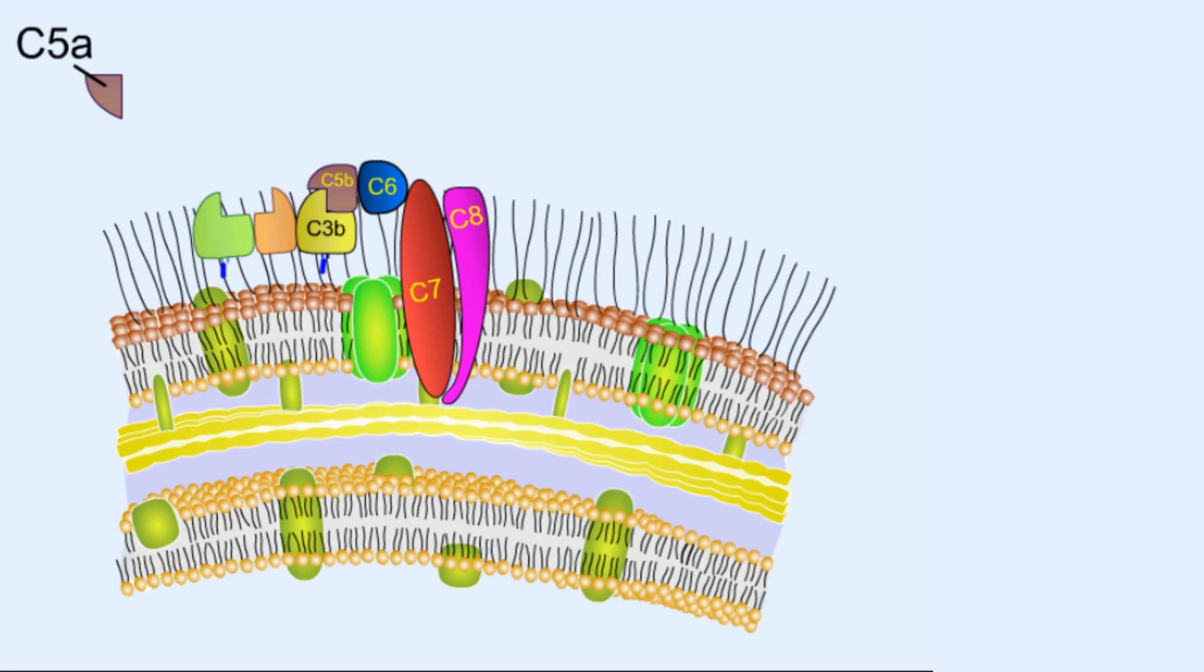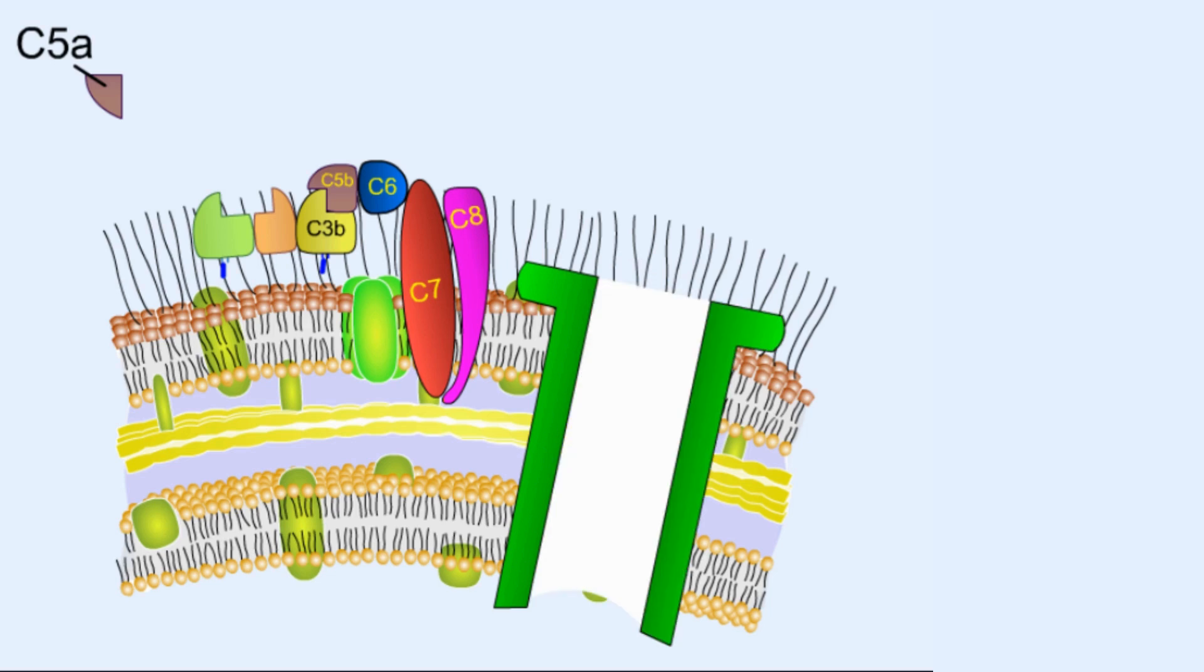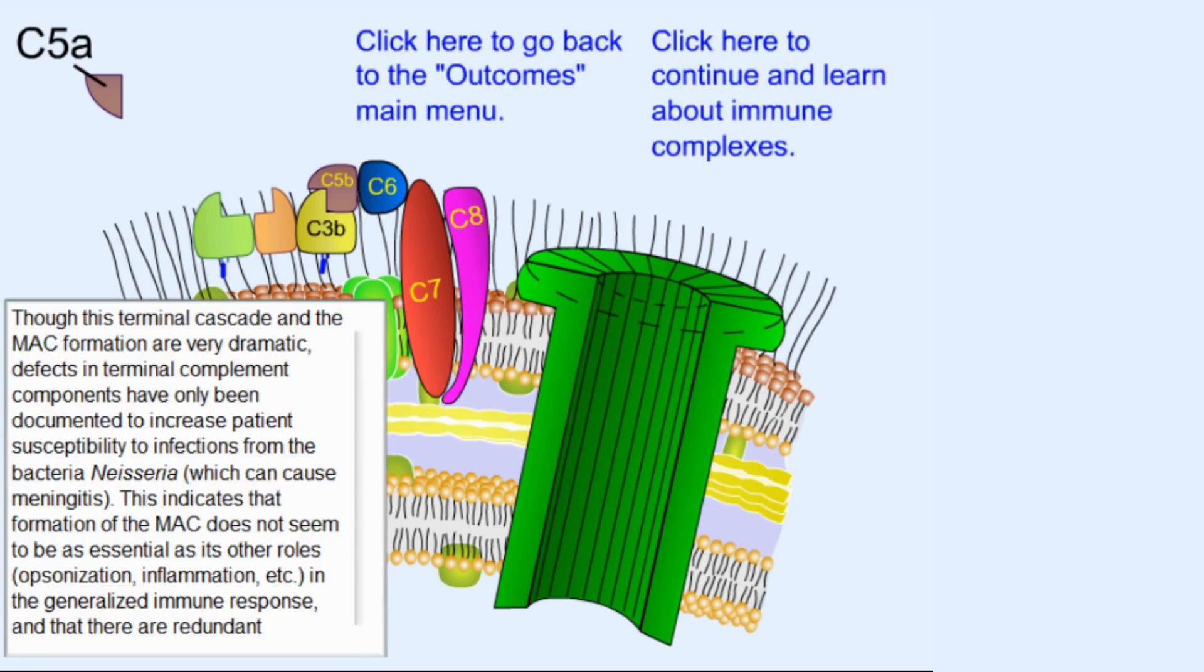Then it will recruit another set of proteins known as C9. A lot of C9 proteins will be embedded throughout the cell membrane to form a channel or a pore known as membrane attack complex. Once the membrane attack complex is formed, as a result of this pore formation, ions start releasing from the cell outside the cell. As a result, the cell will start to die due to osmotic imbalance.